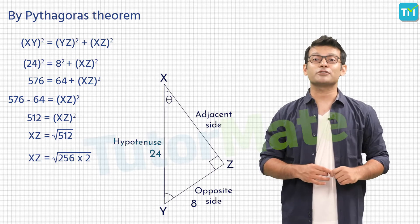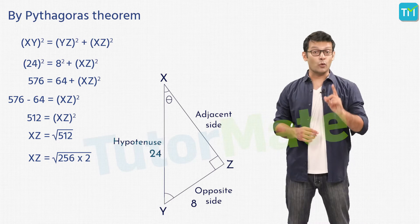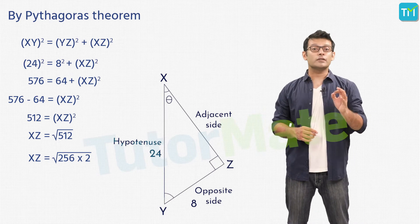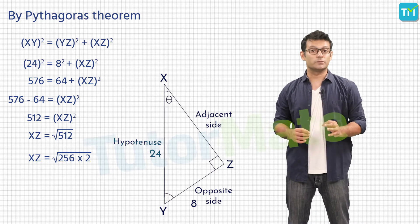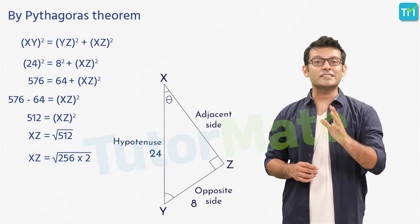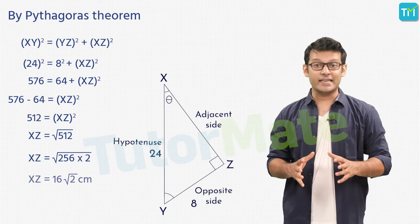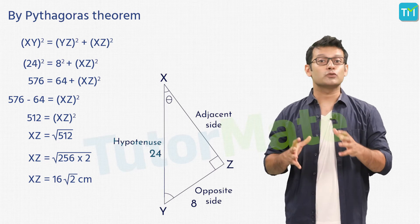Now, taking square root on both sides, we will have XZ = √512. 512 can be factorized as 256 × 2. So, XZ will be equal to √(256 × 2). Here, 256 is the square of 16. So, XZ will be equal to 16√2 centimeters.